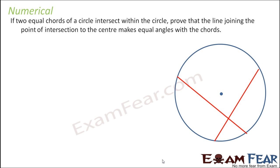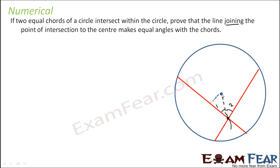Here two equal chords intersect within the circle. We have to prove that the line joining the point of intersection to the center of the circle makes equal angles with the chord — angle 1 is equal to angle 2. We can easily prove it. We can just draw these two triangles and these two perpendiculars.